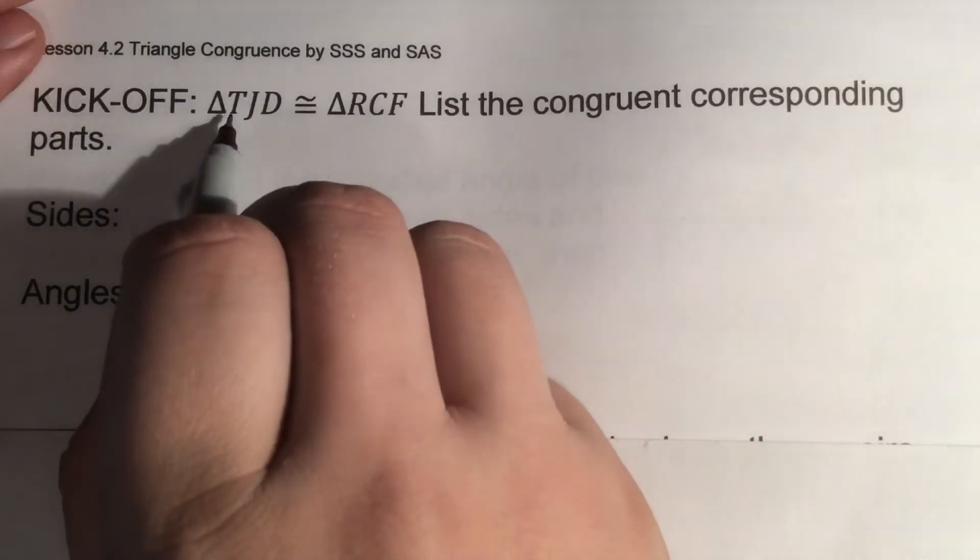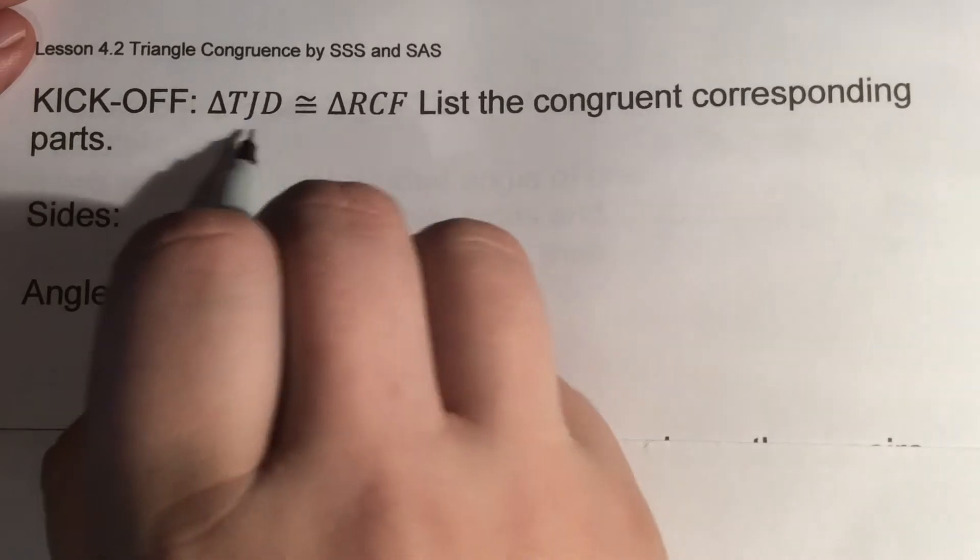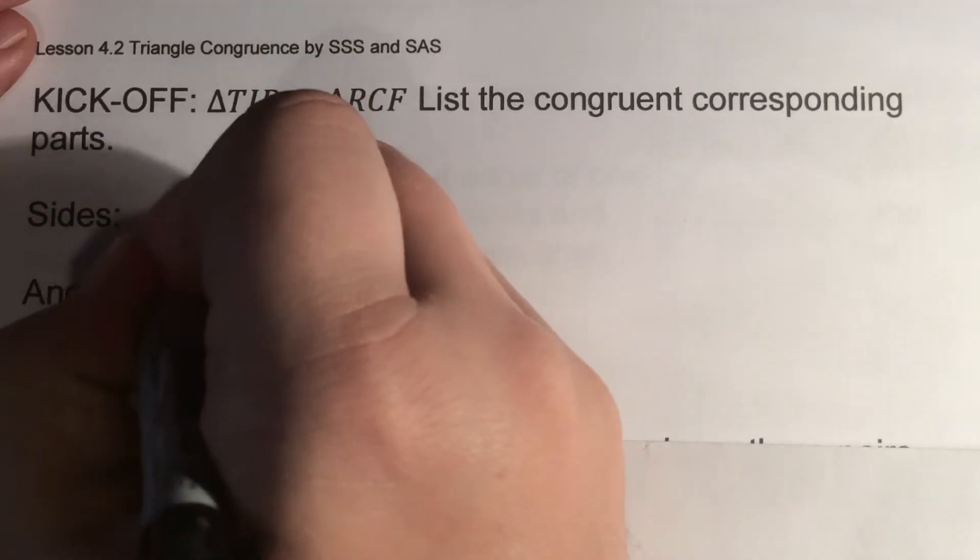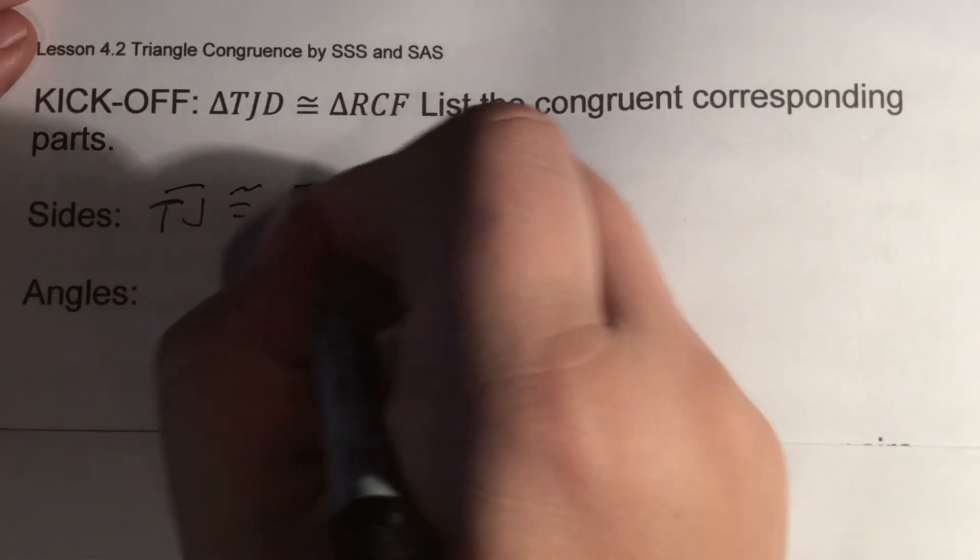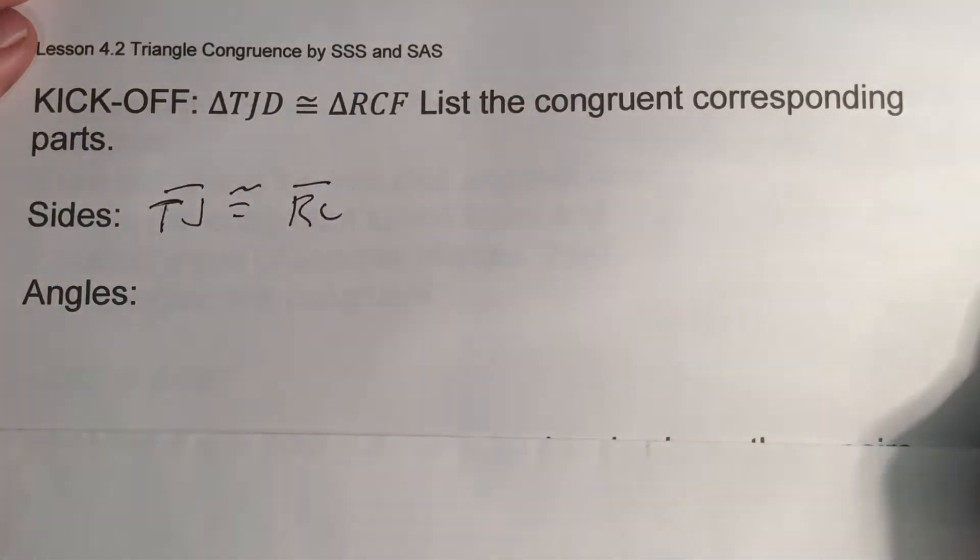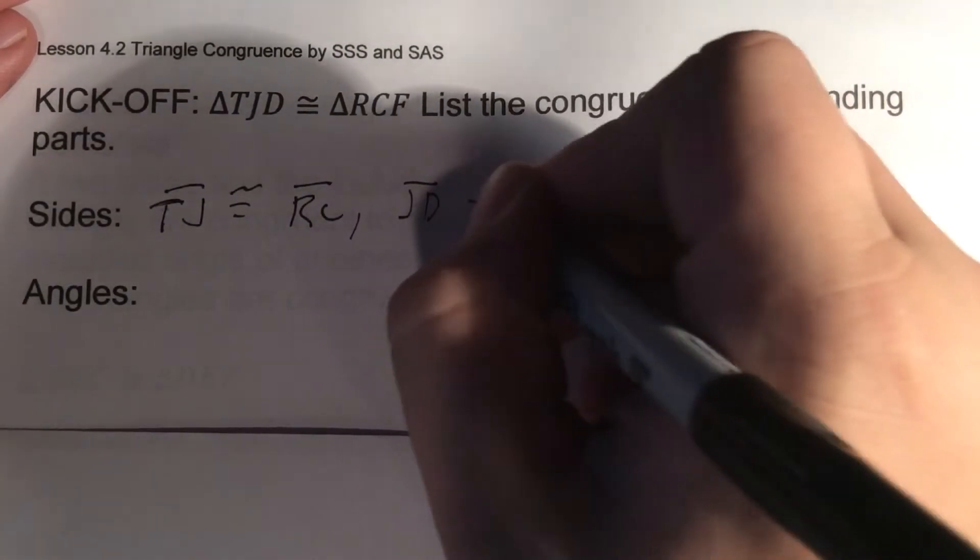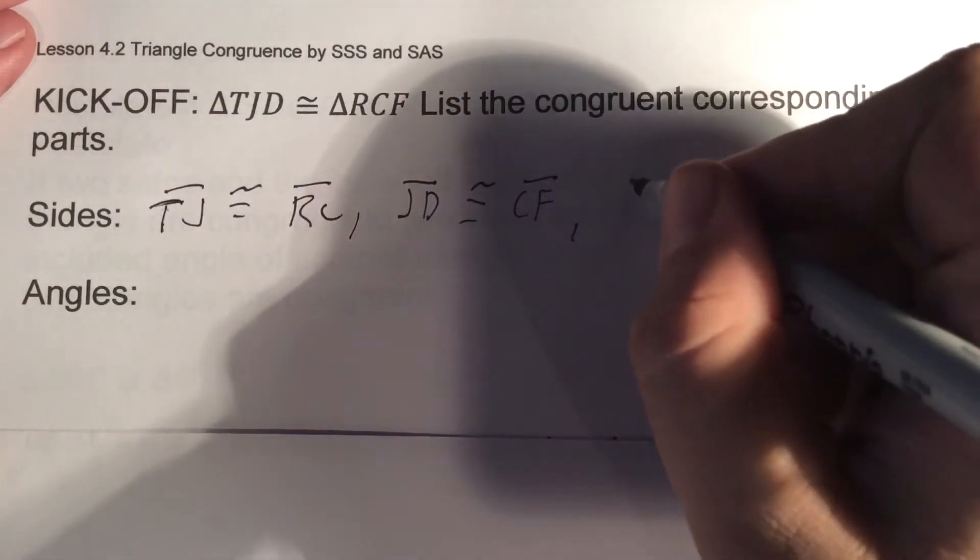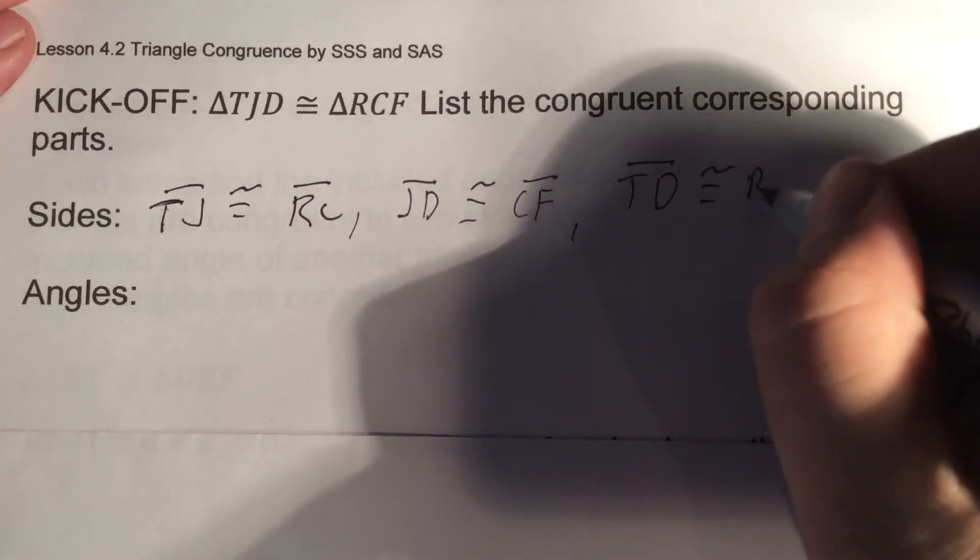Starting with the sides. Remember, order matters with this. The first one ties with the first one, second with the second, third with the third. So we're going to do side TJ congruent to side RC. Then JD congruent to CF. And then TD congruent to RF.